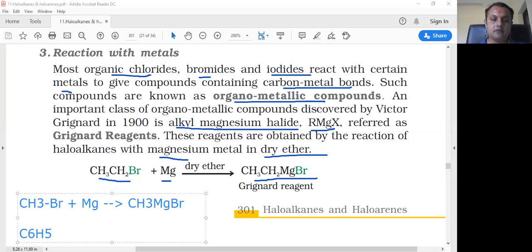Dibromobenzene plus Mg in the presence of dry ether gives C6H5MgBr, which is called phenyl magnesium bromide. These are all Grignard reactions - methyl magnesium bromide and phenyl magnesium bromide are Grignard reagents.